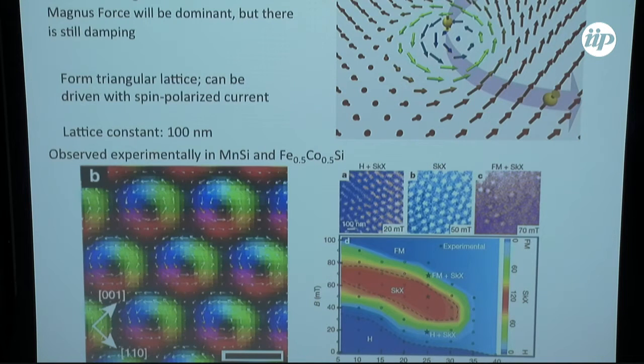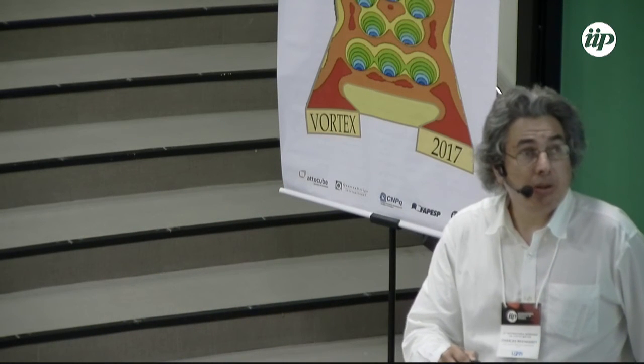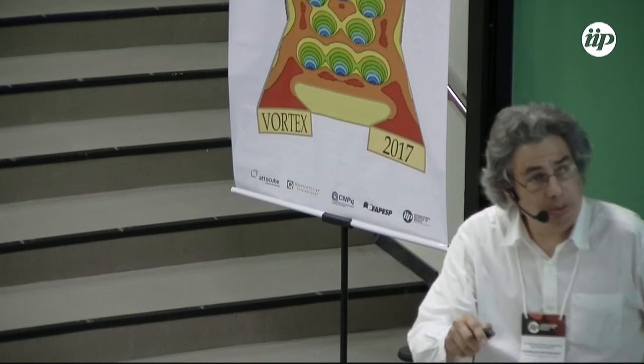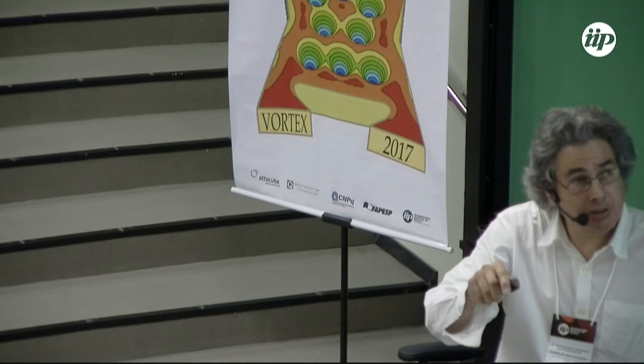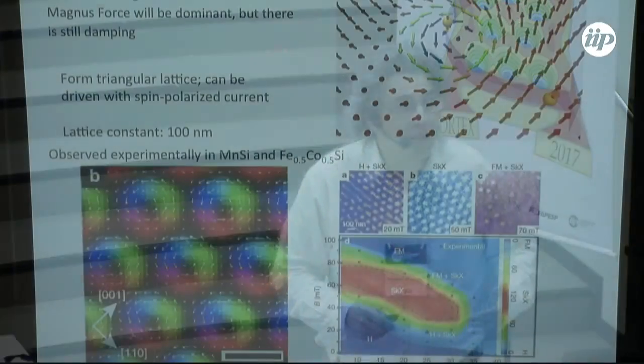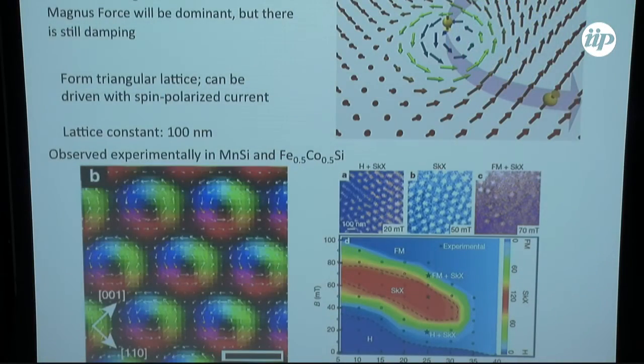So, skyrmions come in all sorts of sizes. They can be down from 10 nanometers to 100 nanometers and even much, much bigger. They can also be set into motion with an applied current. So, here's a spin polarized current moving through a skyrmion. And one thing that happens right away is the electron spin degrees of freedom will follow the spin texture and get wrapped around as it moves through the skyrmion. And this gives rise to a topological Hall effect. And this is important if you want to look at transport measurements.